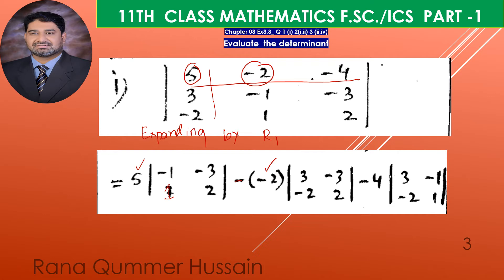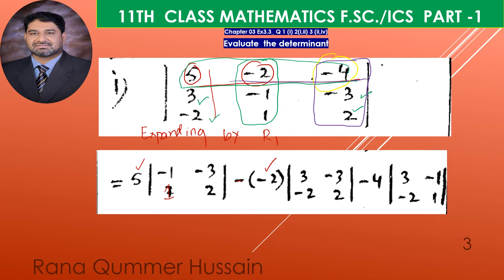In determinant expansion it is very simple — you leave the row and column of the element you are expanding. I will change the color. The minus two exists in the second column and first row, so we exclude that row and column. The remaining elements are: three, minus three, minus two, and two. Then for the third element, which is minus four, it is in the third column. All entries of the third column are excluded, and the remaining elements are: three, minus one, minus two, and one.